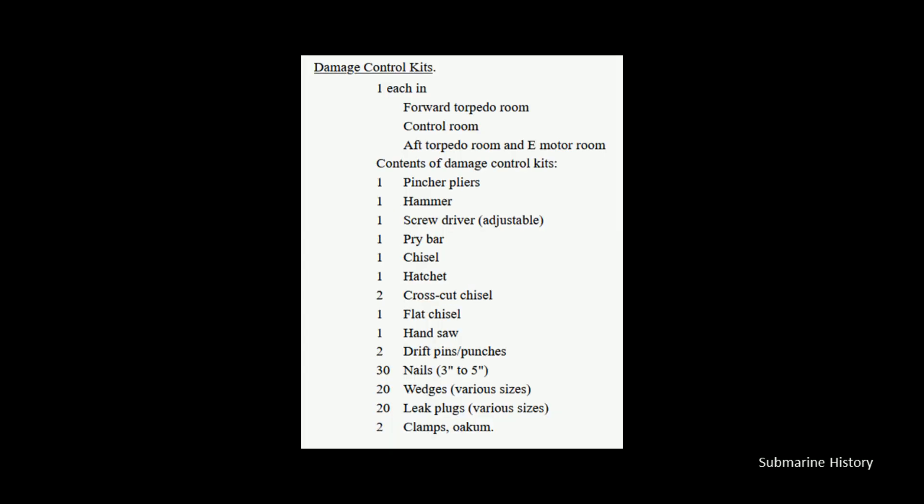In addition to the damage control parties themselves, they had damage control kits. In the case of the Type 7, they would have had three of these kits staged throughout the boat — one in the forward torpedo room, one in the control room, and one in the aft torpedo room and E-Motor room. These are kind of the basic tools of the trade that you would need to control damage. You can always pause this if you want to read through the tool list.